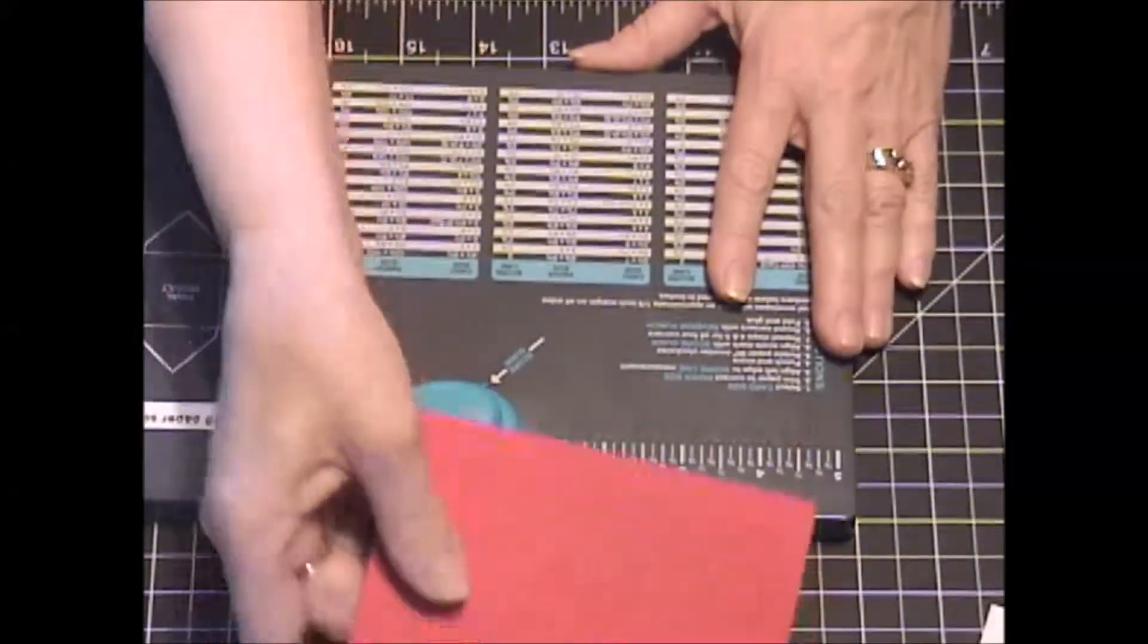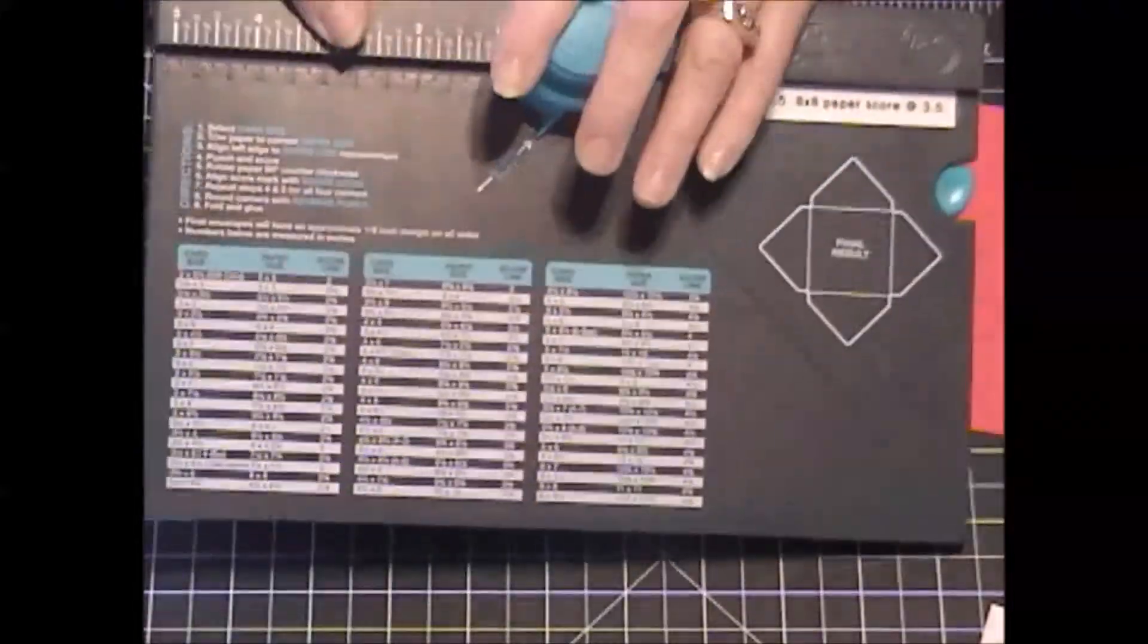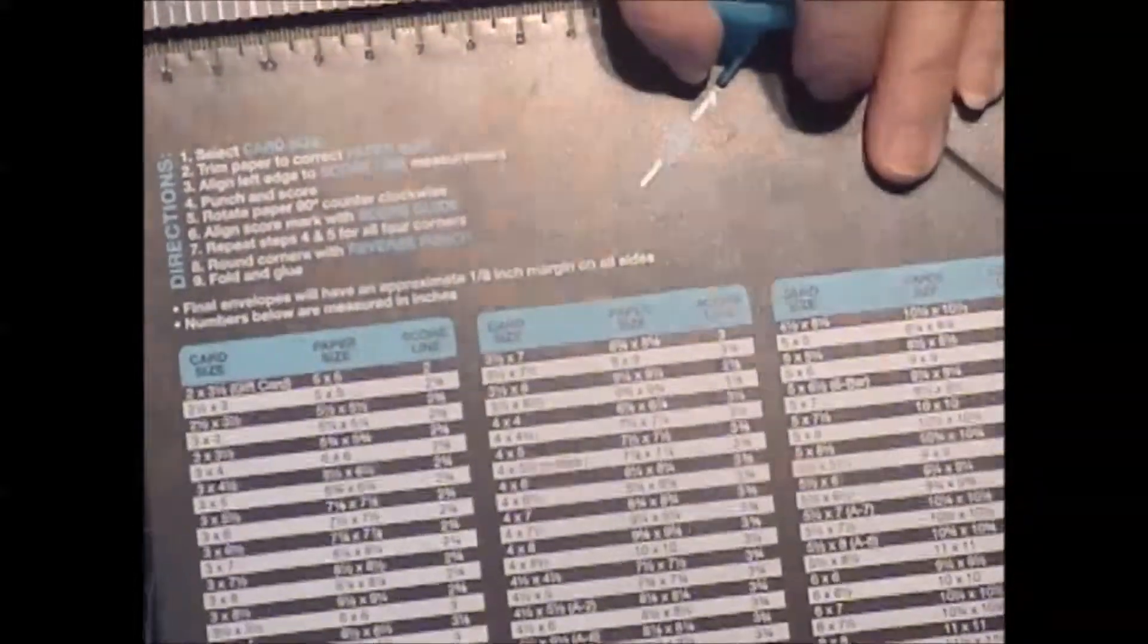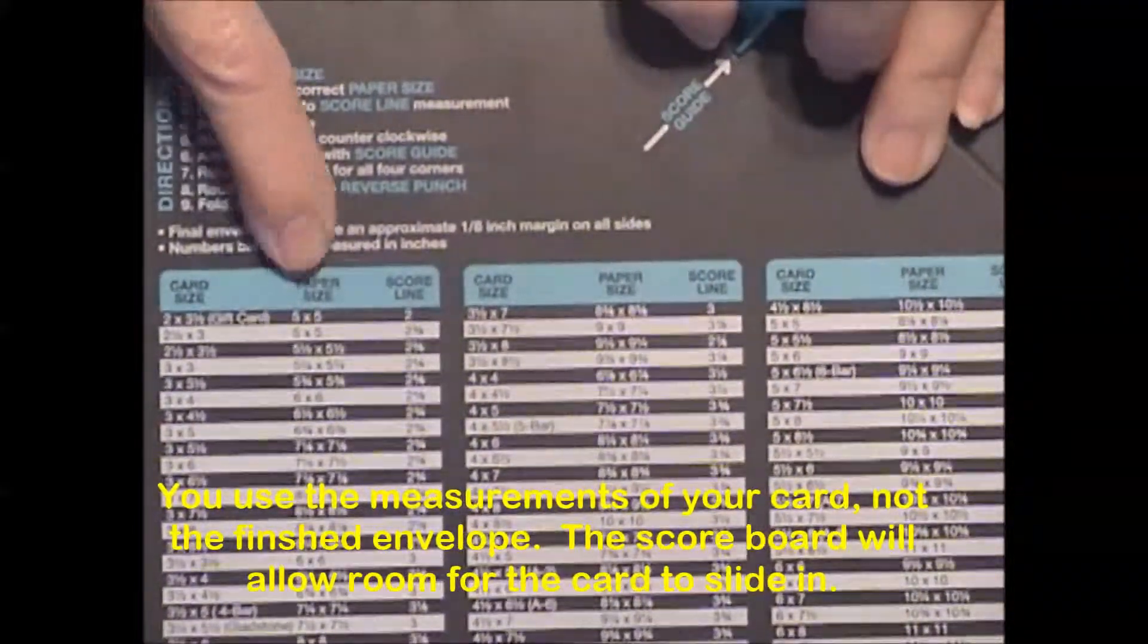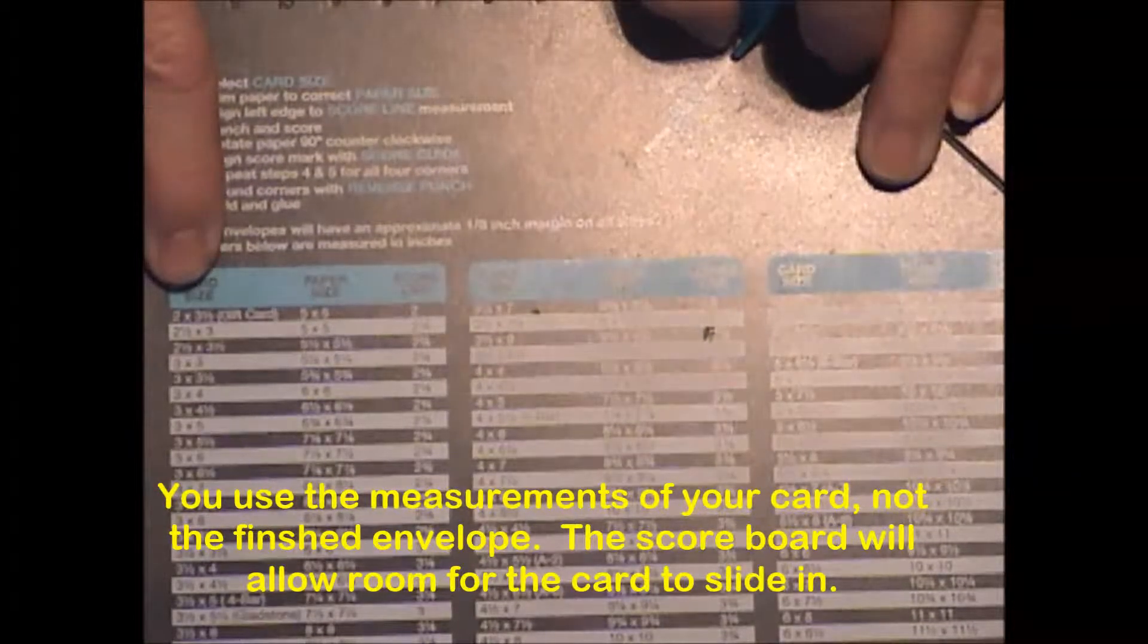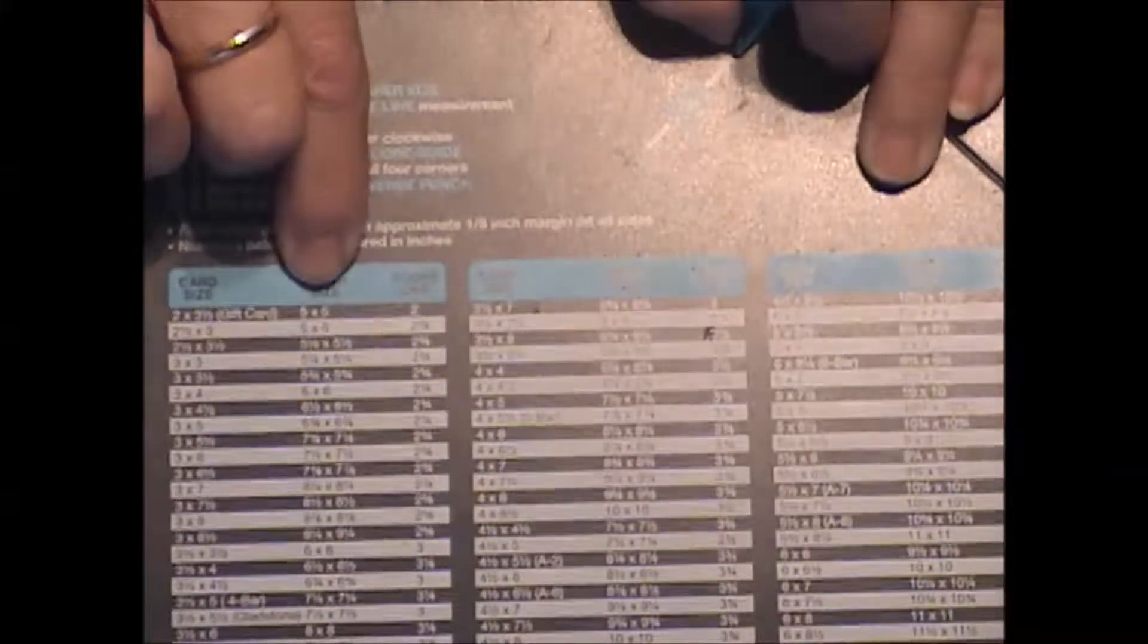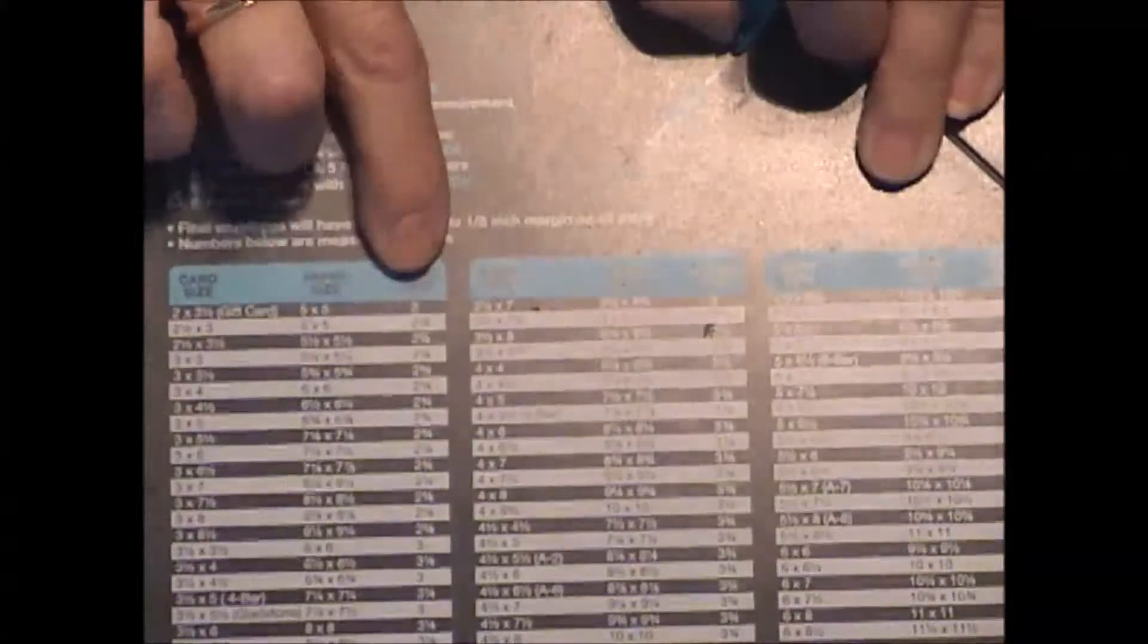Anyway, we are going to make a gift card envelope today, and it says on here for us to start with, I'll show you where it says it, gift card. Right here, and we're going to, and that is a two by three and a half inch card, and we're going to need a piece of sheet of paper, five by five, and our first score mark is going to be at two inches.